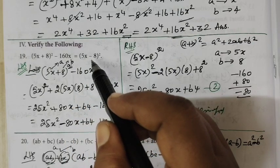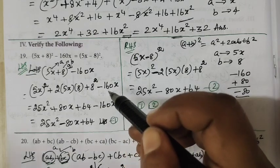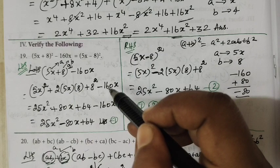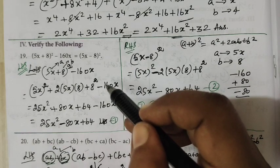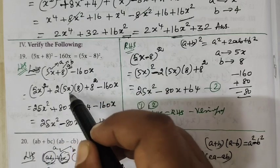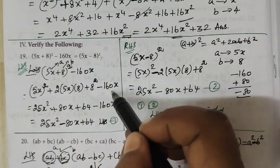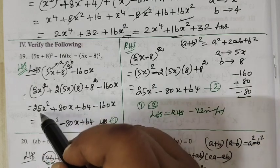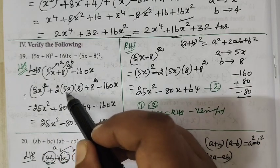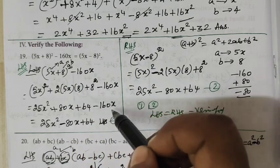Let me prove that. Using the (a + b) whole square formula: a² + 2ab + b². Here a = 5x and b = 8. So 5² = 25, giving 25x². Then 2 × 5 × 8 = 80x. Then 8² = 64.